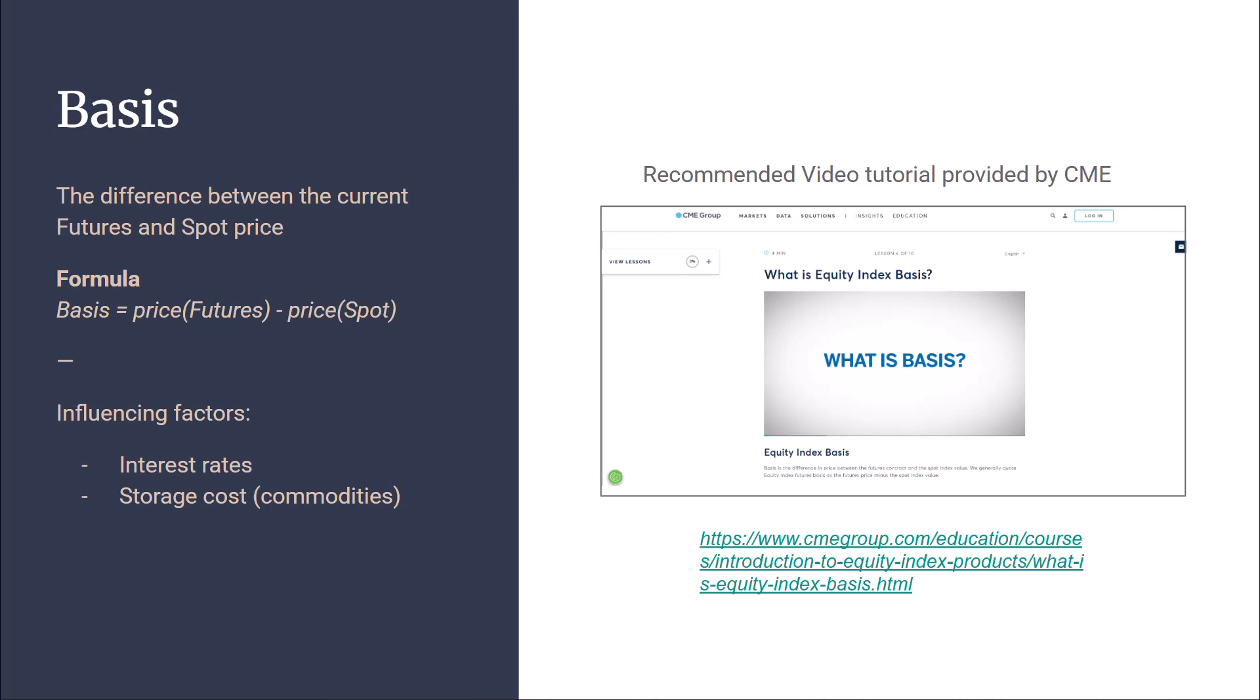Before we start talking about creating strategies, I would like to first clarify the term basis. Basis is the difference between the current futures and spot price, and it follows a very simple formula. The formula for basis is equal to price of futures minus price of spot. There are many factors that influence the basis, for example, current interest rates and storage costs in case you trade commodities.